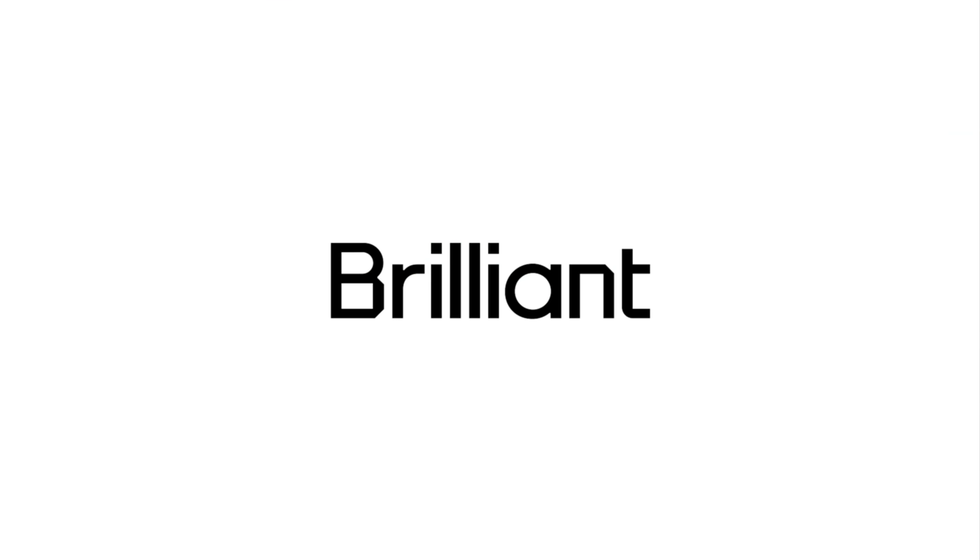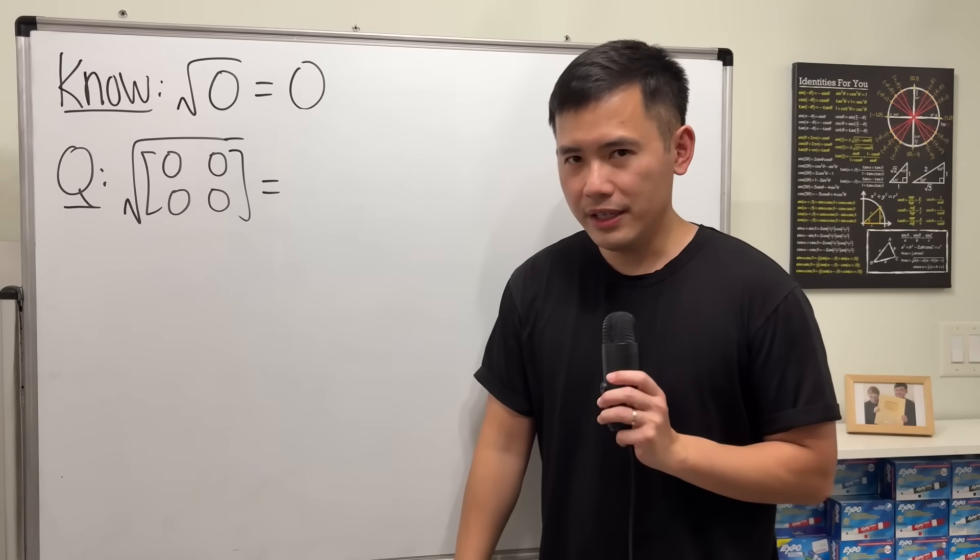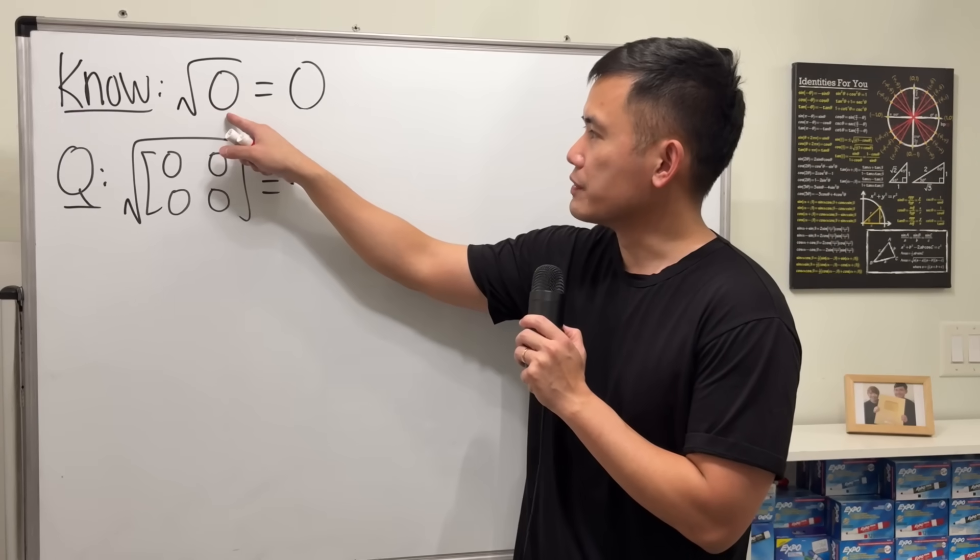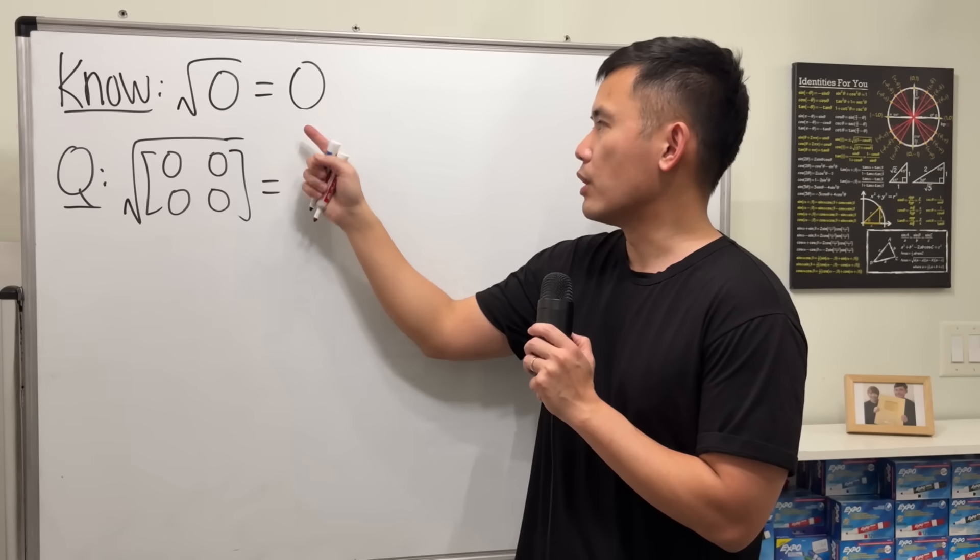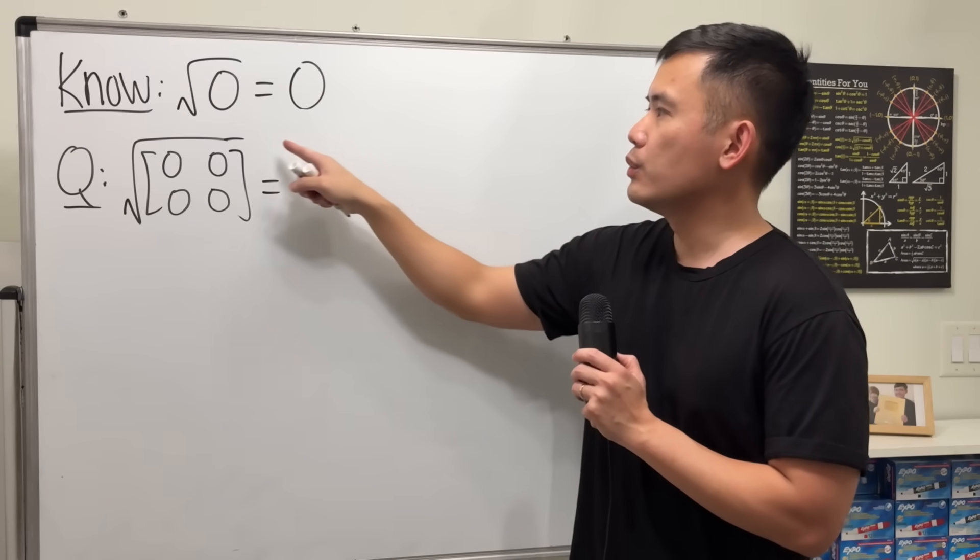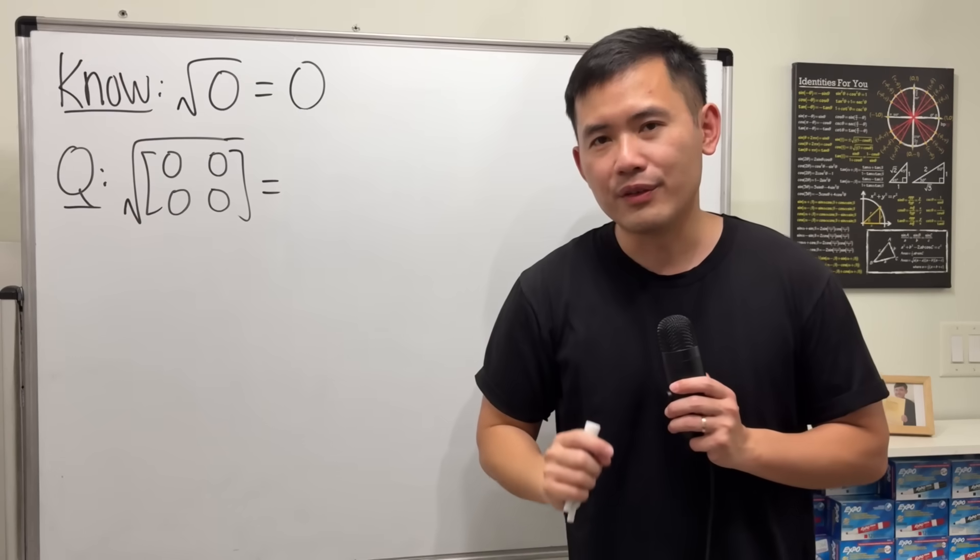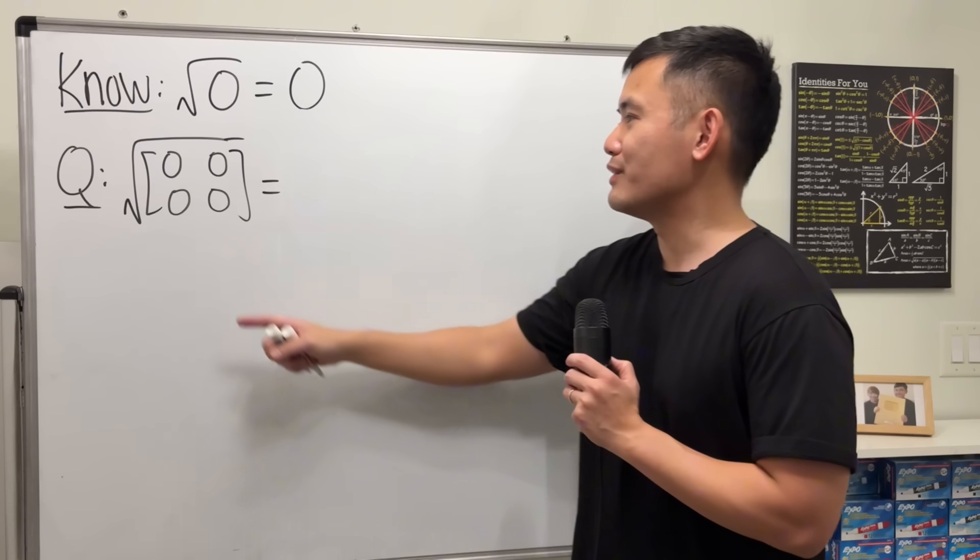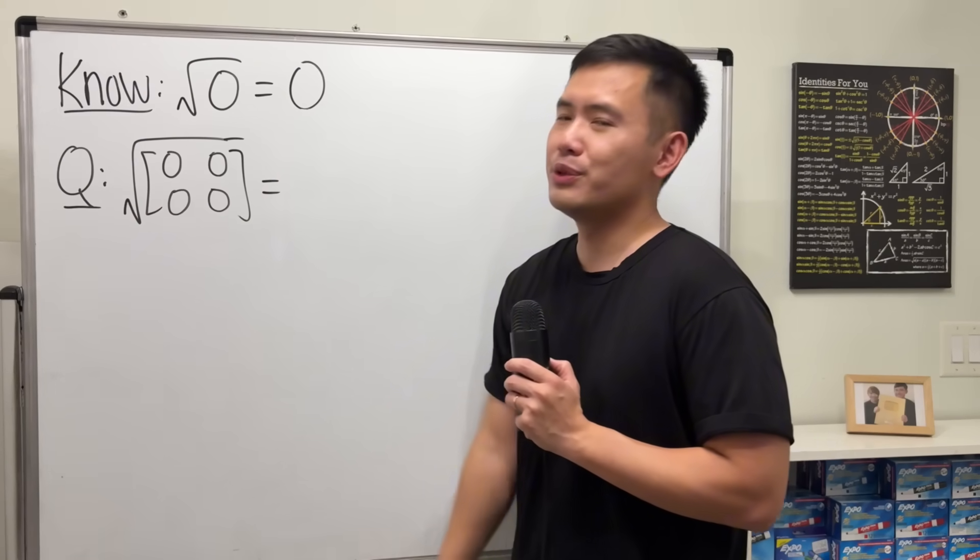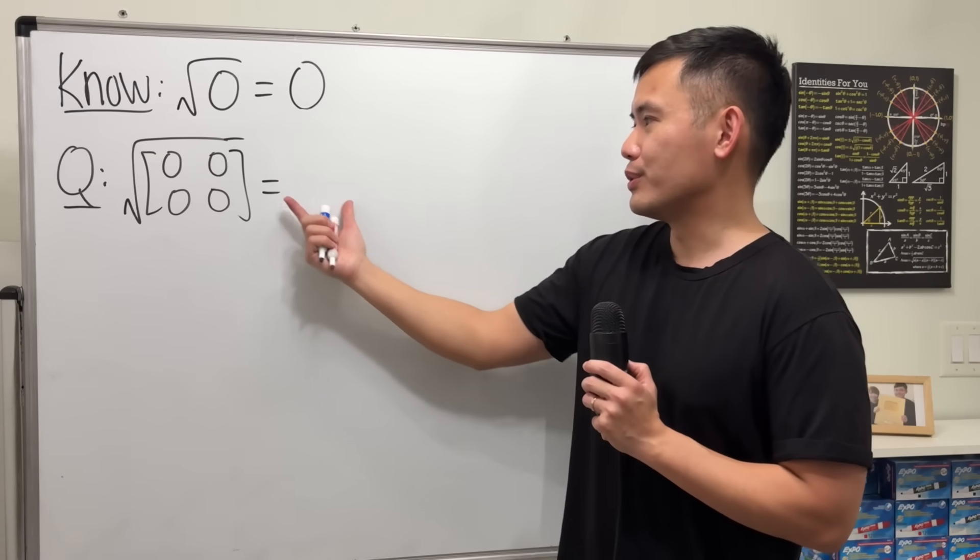This video is sponsored by Brilliant. As we all know, when we have square root of 0, the answer is just equal to 0, because 0 squared will give us 0. But how we have thought about it. What if we have square root of a 0's matrix? Is the answer just equal to the 0's matrix?